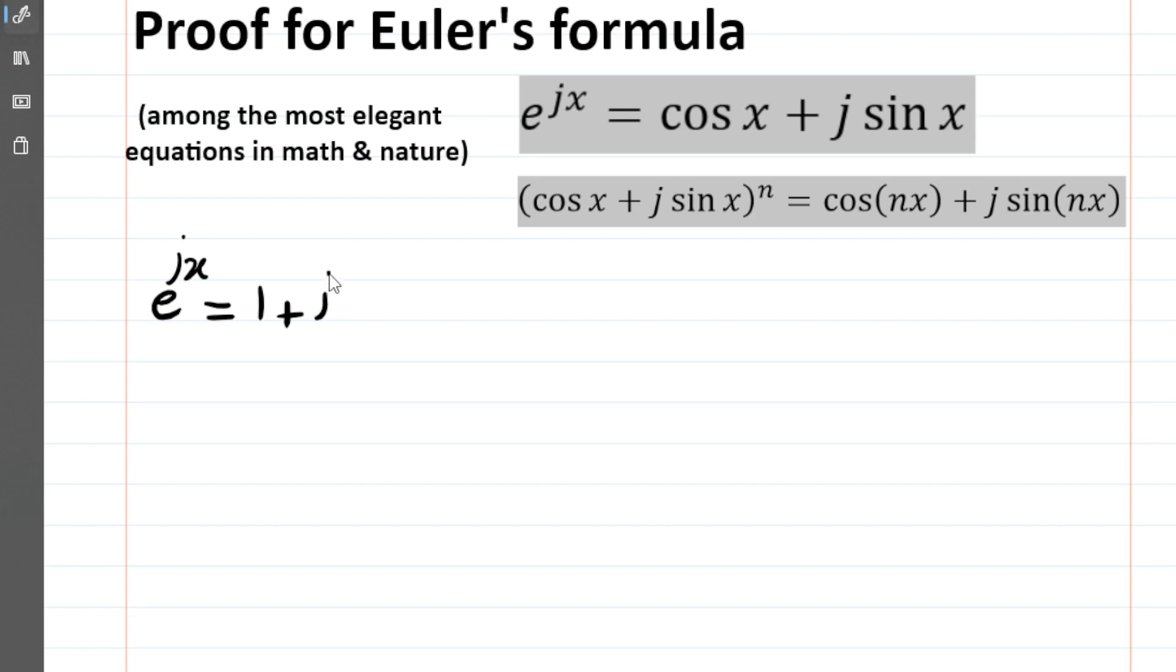This gives us: 1 + (jx)/1! + (jx)^2/2! + (jx)^3/3! + (jx)^4/4! + (jx)^5/5!, and you can keep writing this forever, of course. But let's stop at this point.